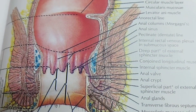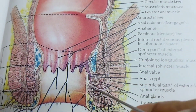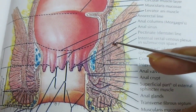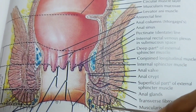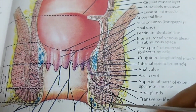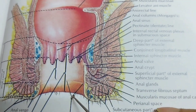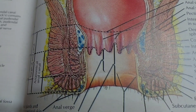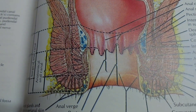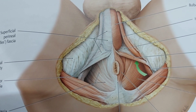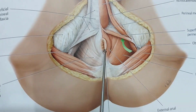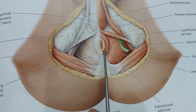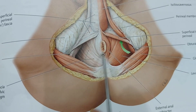The internal anal sphincter occupies the upper three-fourths of the anal canal, and the external anal sphincter occupies the whole length of the anal canal. These are the sphincters of the anal canal. The external anal sphincter is a separate muscle and has three parts.